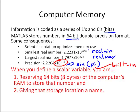But 10 to the minus 16 is pretty small, pretty close to zero, so it's usually not a practical consequence. So, when you define the scalar variable, you are doing two things. You're reserving 64 bits, which is 8 bytes of the computer's RAM to store that number. That's relevant to say you have 2 gigabytes of RAM. You're making a very small dent in that RAM when you define a variable. And then you're giving that storage location a name.